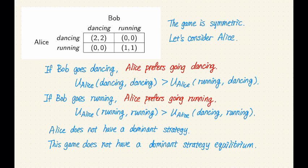Now, when we're considering Alice, when we're trying to figure out whether Alice has a dominant strategy, we need to look at if Bob chooses a particular action, then which action does Alice prefer?